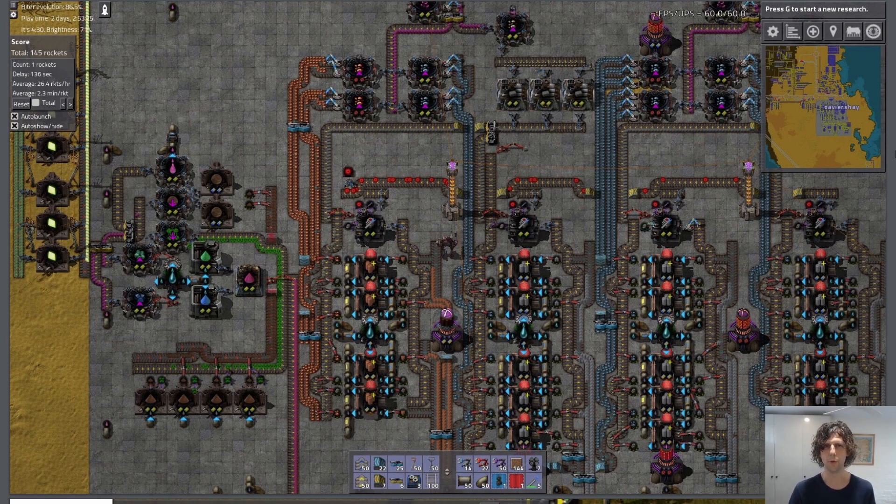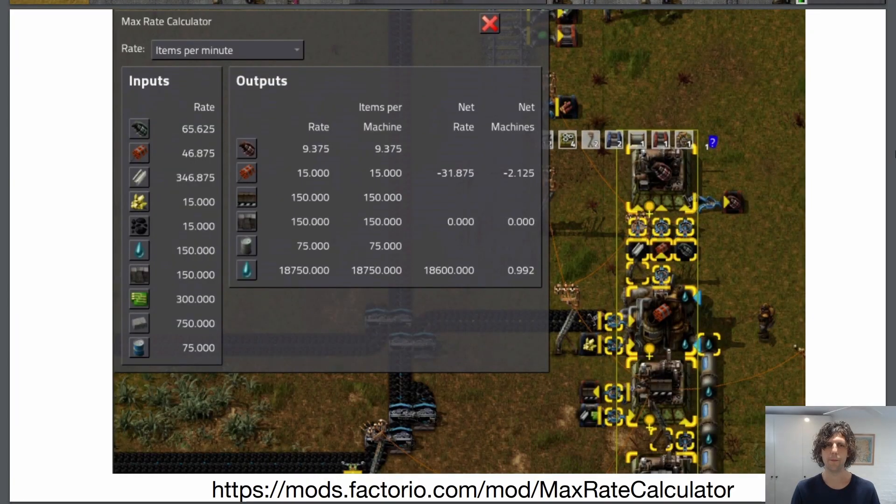In practice, I don't really develop this anymore. I don't really use it. Max rate calculator is a mod where you can just select a bunch of machines and it tells you their rate and items per machine. It's not actually solving anything for you, but based on this output, you can get pretty close to optimal just by eyeballing it. And it's much quicker than tabbing in and out of the game.